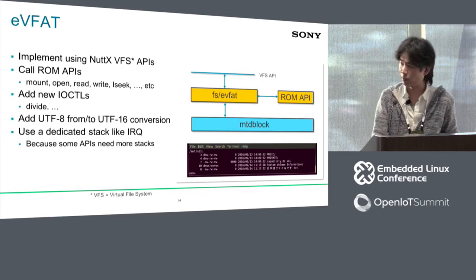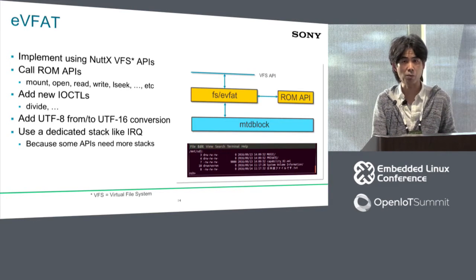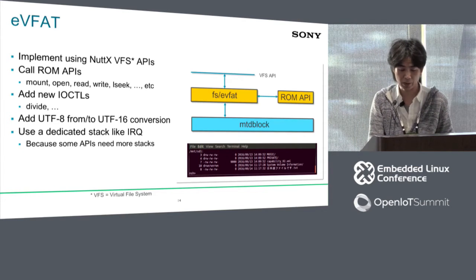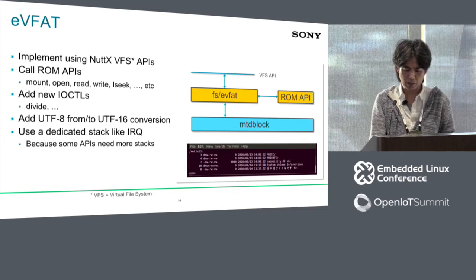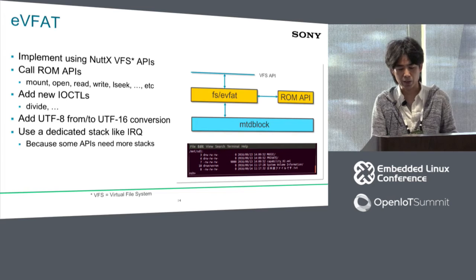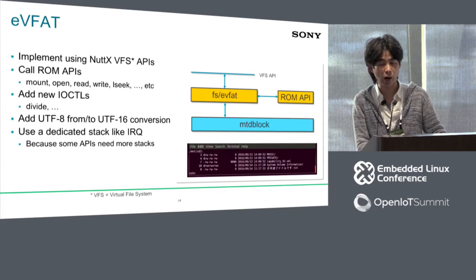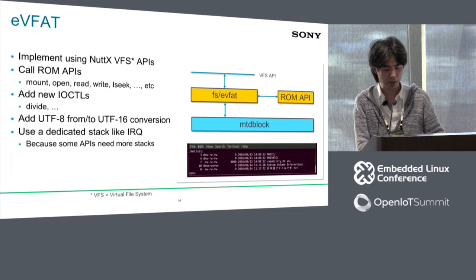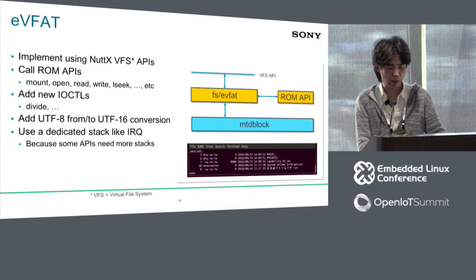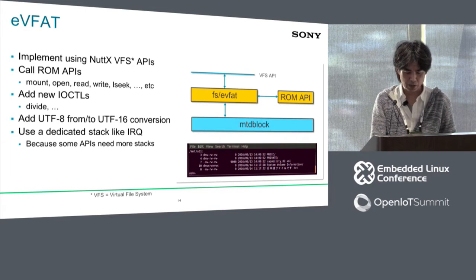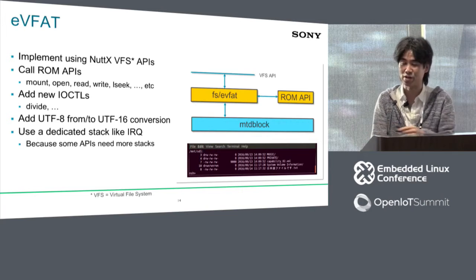The next slide shows EBFAT porting. We implemented EBFAT using virtual file system APIs, and similar to eMMC and SD drivers, the file system calls ROM APIs — for example mount, open, read, and write. Because the ROM API supports UTF-16 only, we added a conversion logic to UTF-8, since UTF-8 is very easy to handle inside the operating system including libc. We did not modify the file system or libc — we just added this conversion layer. As you can see in the screenshot, Japanese filenames are supported.